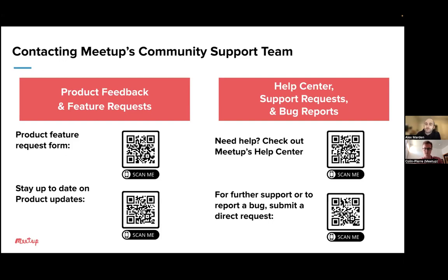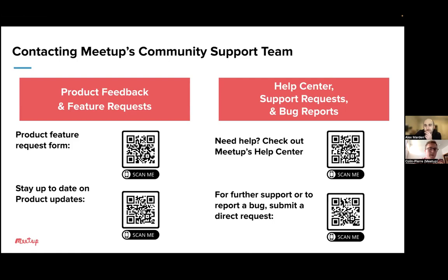Don Percy asks: 'Will the Meetup Organizer app populate with previous Meetup events of a group?' Yes — when you log in, you should be able to see all your past events. Now, there is a maximum of 30 events that will show up. Of course, many groups have more than 30 past events. We've heard your feedback and shared that with our product team to hopefully increase the cap for that or just not have a cap at all. Because if you want to copy a past event, that's super helpful to have access to.